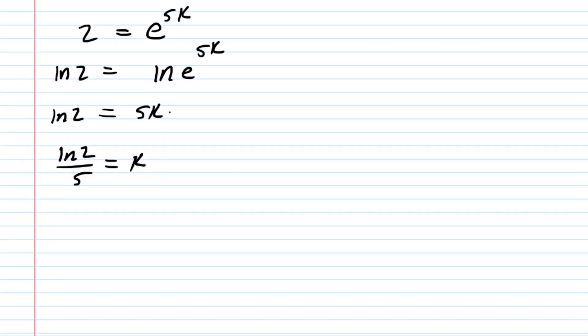Now tripling the population means that your P(t) is going to equal three times the initial population. We don't know the value of t, that's what we're going to look for, but tripling the population means that P(t) is equal to three times P₀.